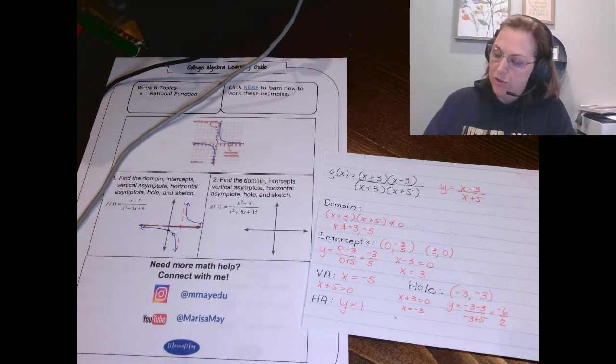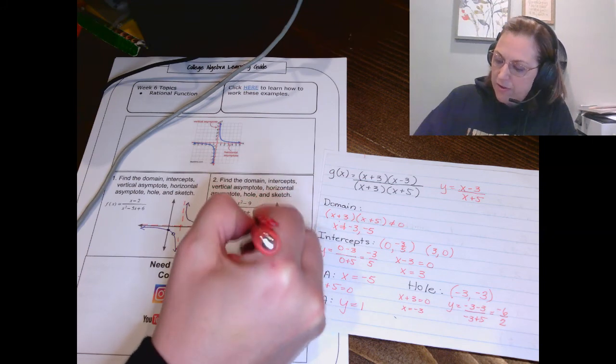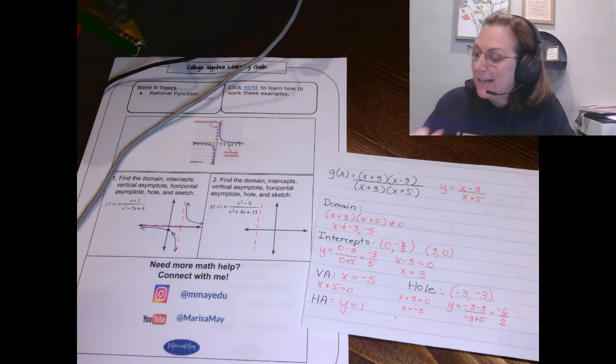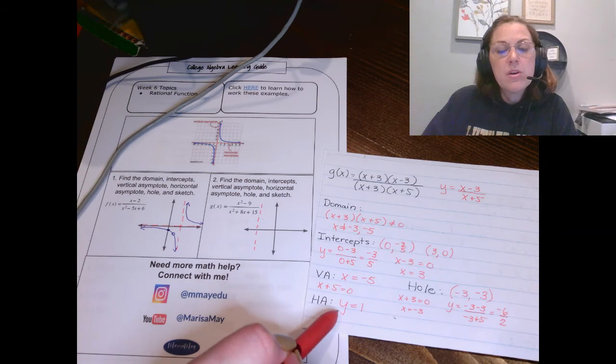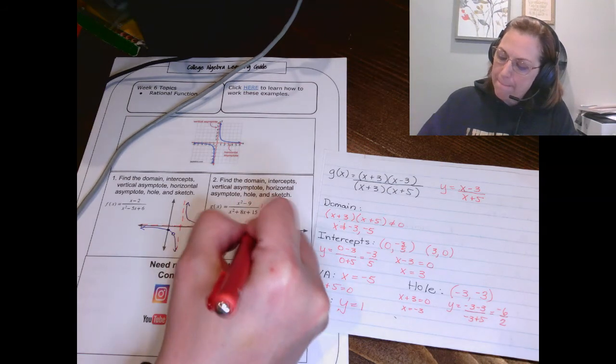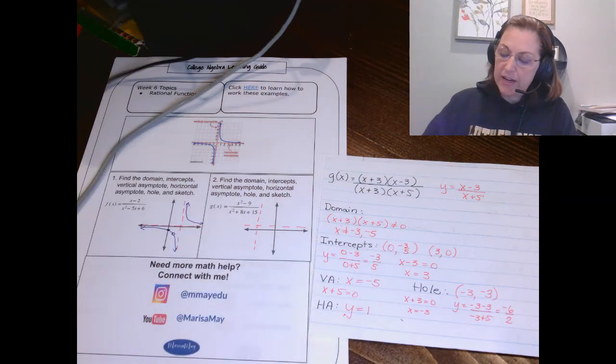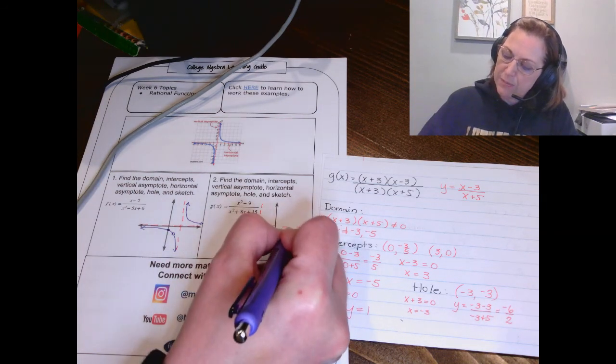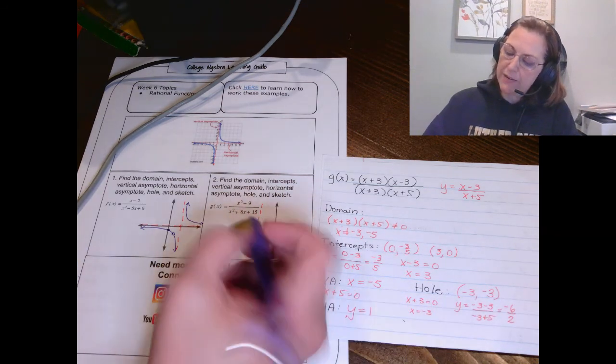Start with the asymptotes. Plot your asymptote, your vertical one at negative 5. No, I did not count over there. I just moved over because we're doing a sketch. We don't need to be precise. Otherwise, I'd have a ruler out, right? Horizontal asymptote at y equals 1. Intercepts next. So you've got intercepts at 0 negative 3 fifths. That's down here. And you've got an x-intercept at 3 0. And then my hole is at negative 3 negative 3. So it's here.